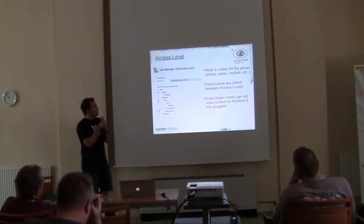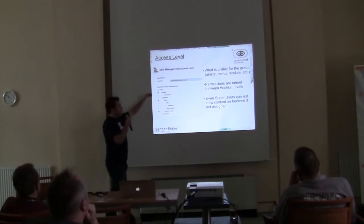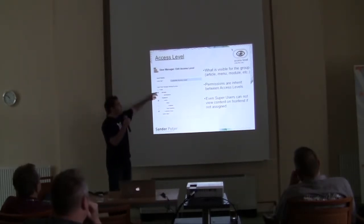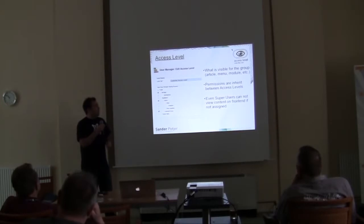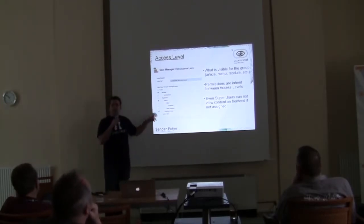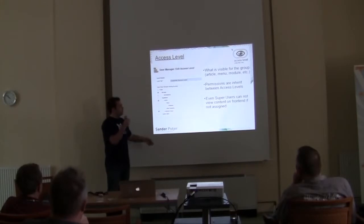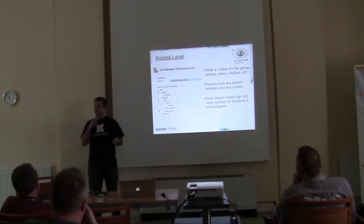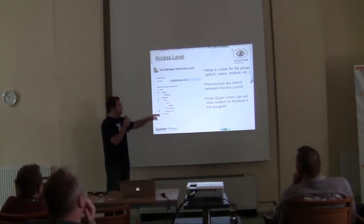And at last, we have the access levels. Access levels are used for menu items, articles, modules, etc. Those permissions are also inherited. Some documentation says they don't inherit between access levels, but actually they do. When you assign a manager, the administrator group will also be able to see the content — you don't need to assign the administrator as well. When you don't assign a super user group to an access level, the super user will not be able to see the content. That's a main issue — if you allow a user group to log in to the admin but don't assign it to the special level in the backend, they will not be able to see the admin menu.